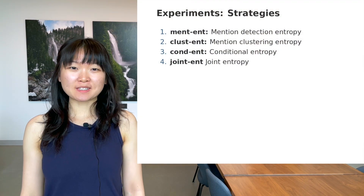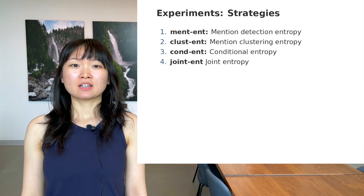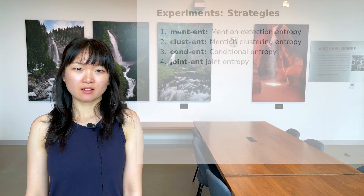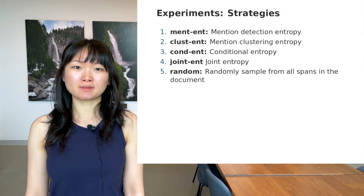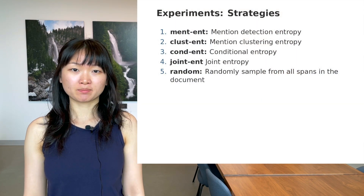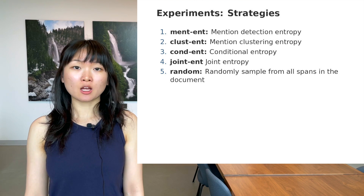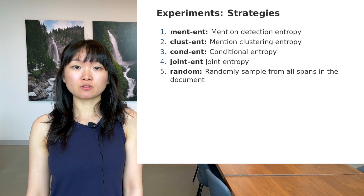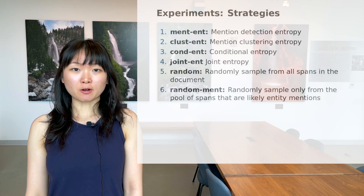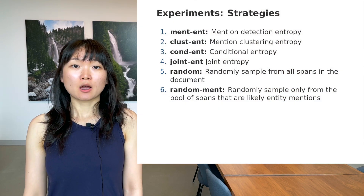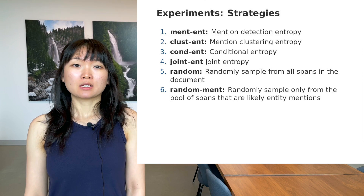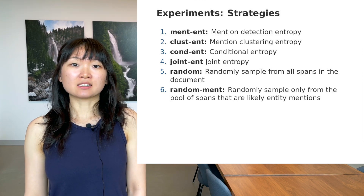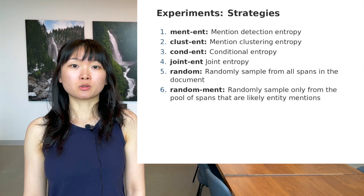In our experiments, we test our uncertainty sampling strategies and compare them against two random sampling baselines. One baseline is pure random sampling from all spans in the document. We imagine this baseline will sample many spans that are not entity mentions and provide uninformative labels. Therefore, we have another sampling baseline where we only randomly sample from the pool of likely entity mentions. This baseline is much stronger and more comparable to our other strategies.